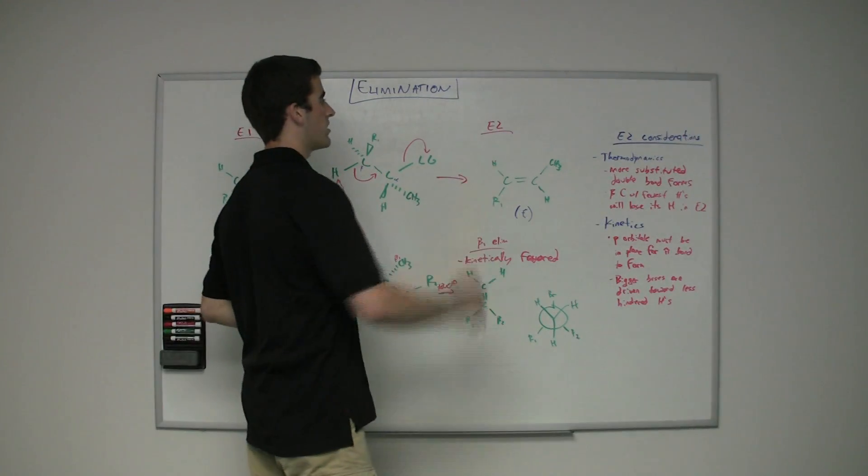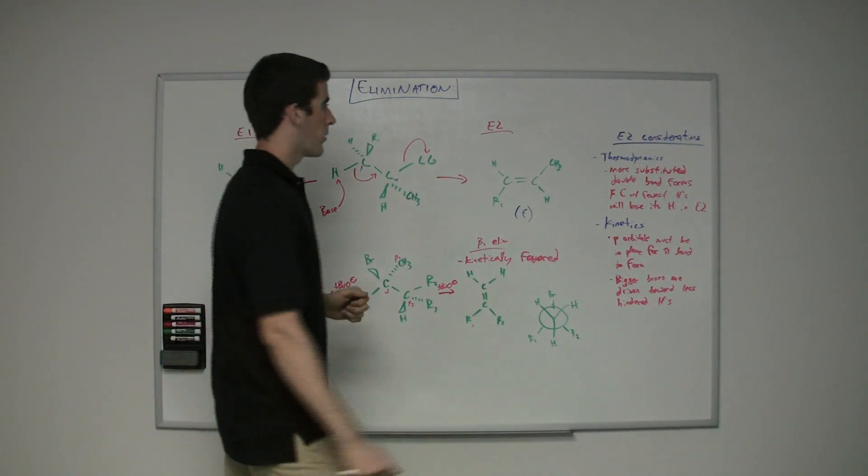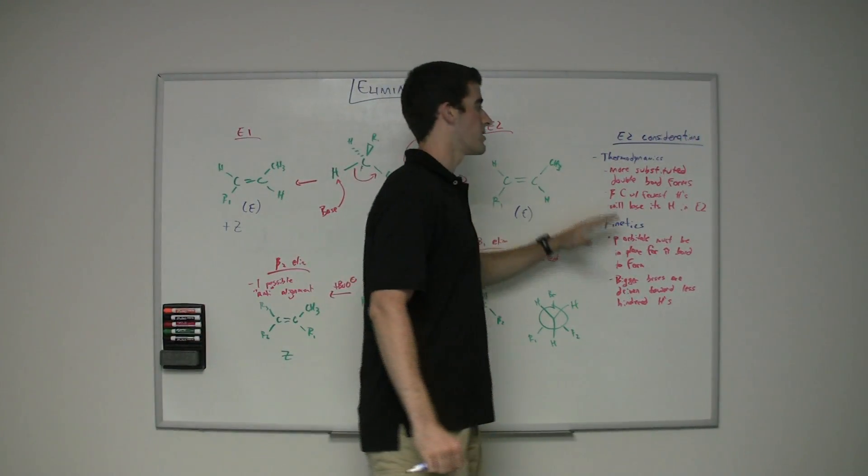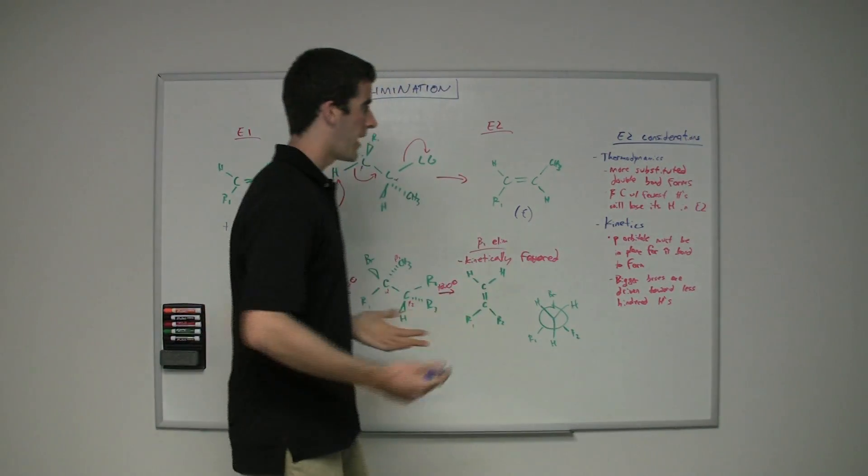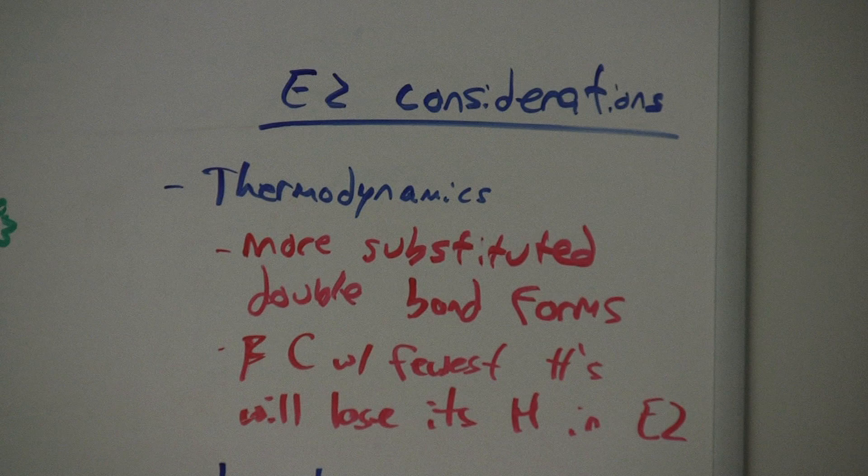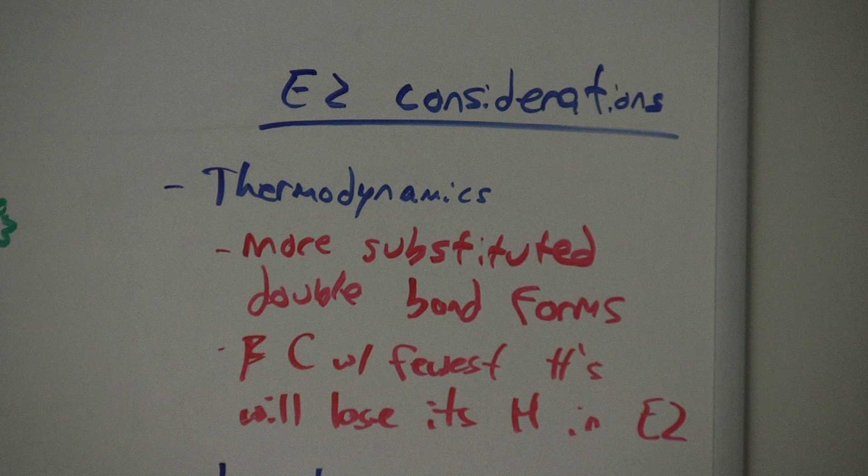So now let's go more in-depth into E2 considerations. There are two E2 considerations that you can take into account, the thermodynamics or the kinetics of what's going on in the reaction. So if we look at thermodynamics, we're really thinking, well, the more substituted double bond is the one that's going to form.